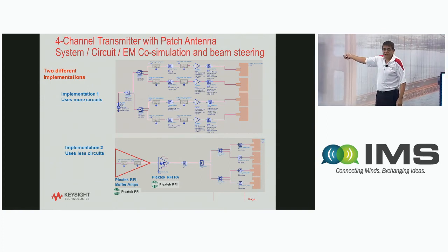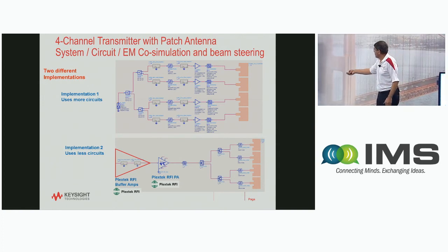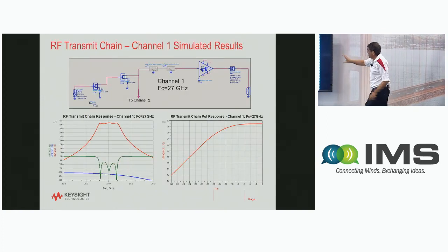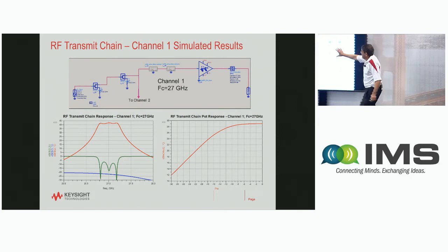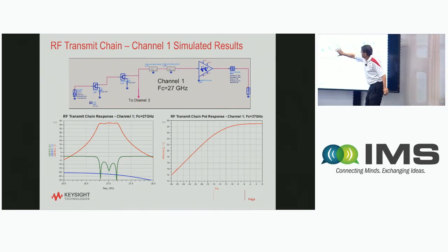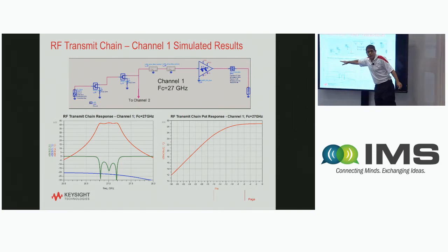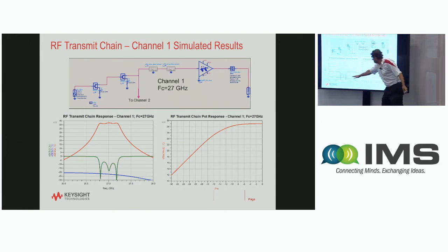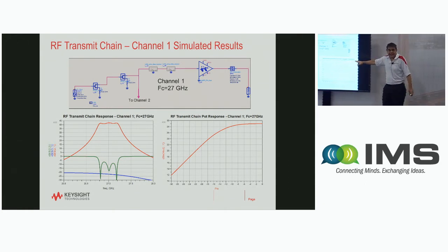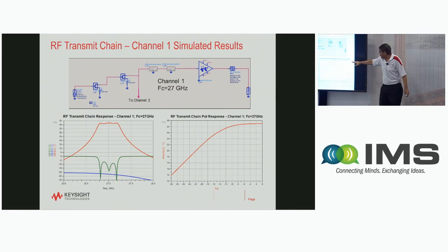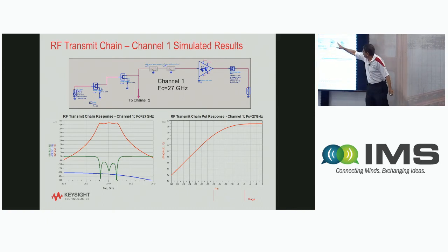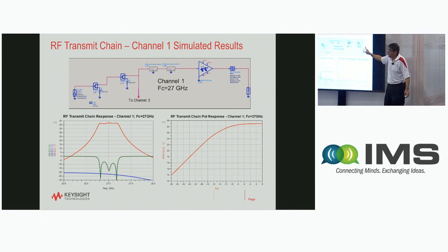Using the top implementation for this simulation, taking one side and simulating it, you can see approximately 45 dB of gain for the whole system and 28 dBm of output power going to the antenna.